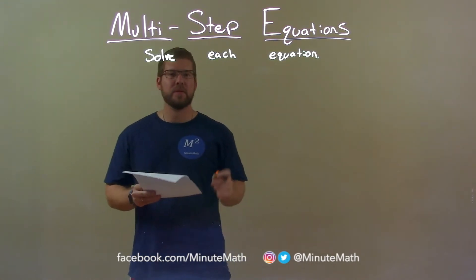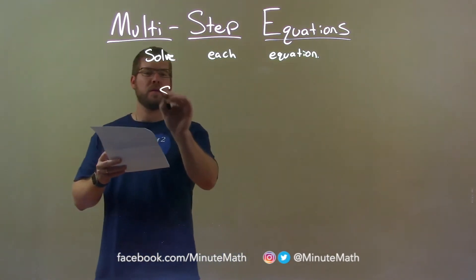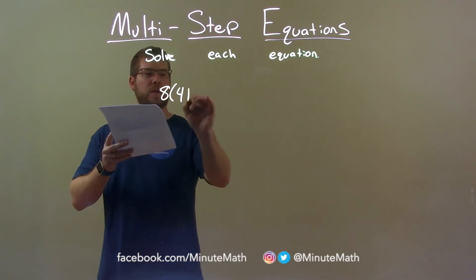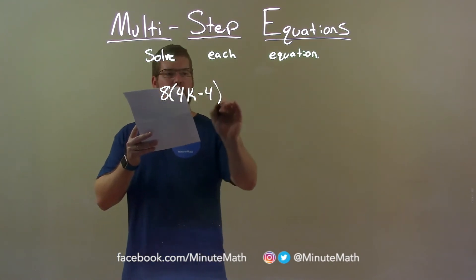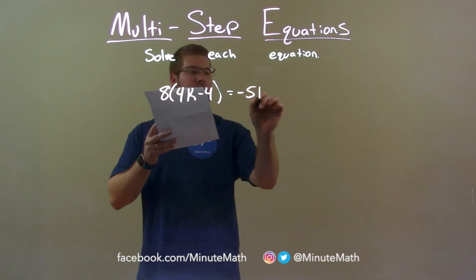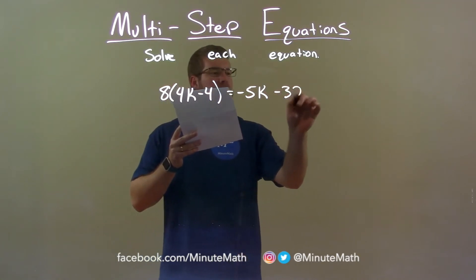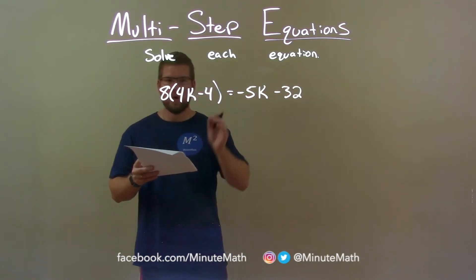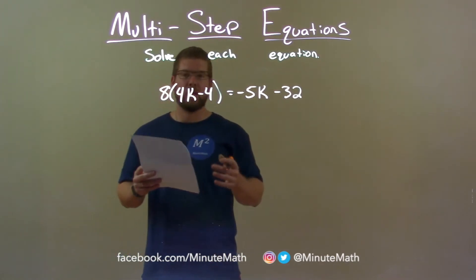Now, if I was given this equation, 8 times 4k minus 4 equals negative 5k minus 32, what I want to do is get k by itself.